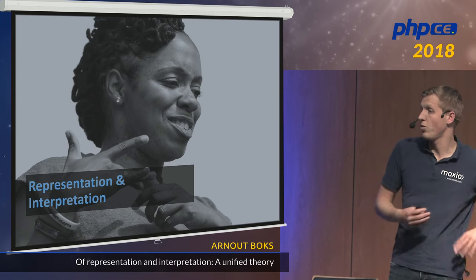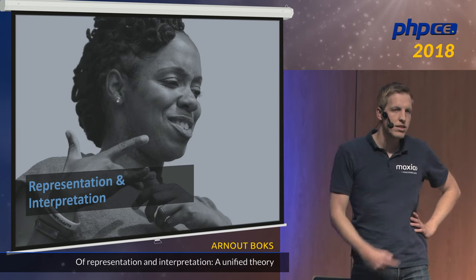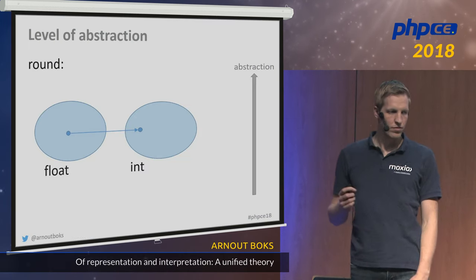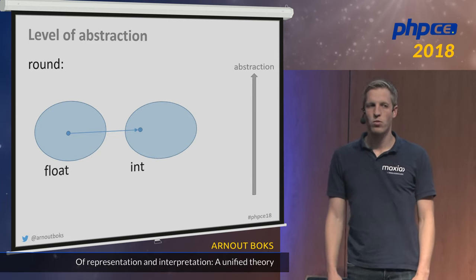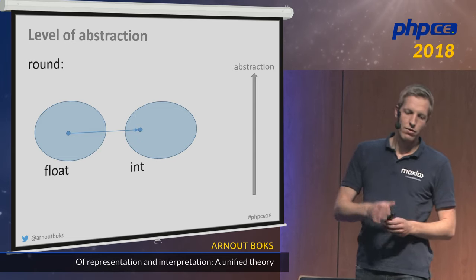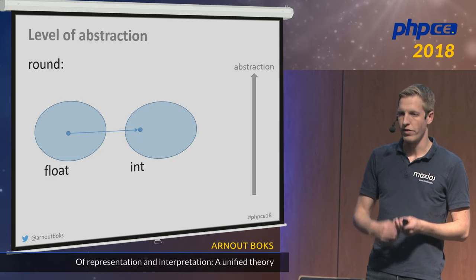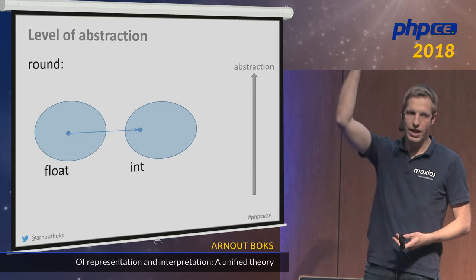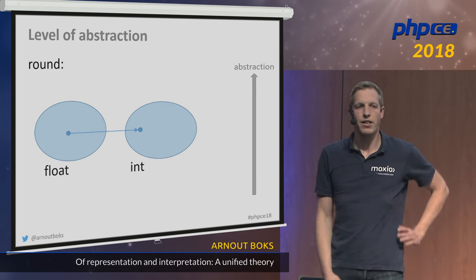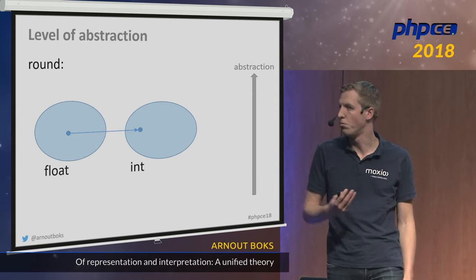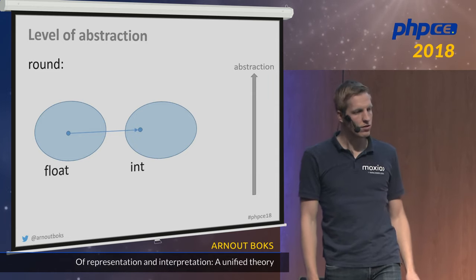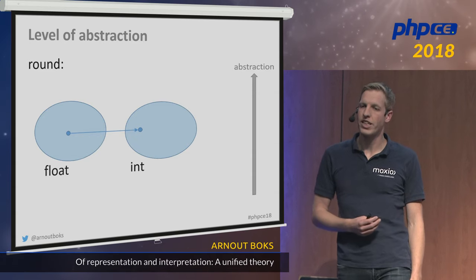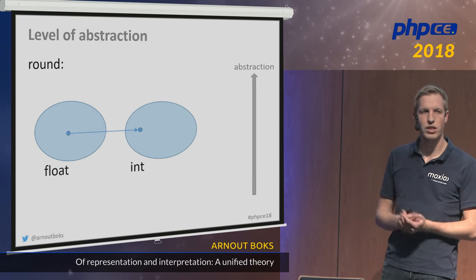Let's look at representation and interpretation, which relate to the level of abstraction around functions. On one side we have things at a very low level of abstraction — like bytes or electric currents — and we can't attach much meaning to them. At a very high level we have types we create in our own code, like a value object representing money. A rounding function maps float to integer — both are at roughly the same level of abstraction.